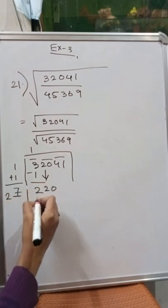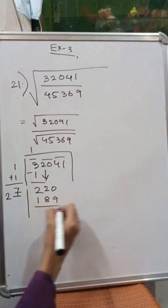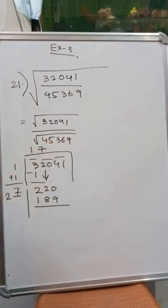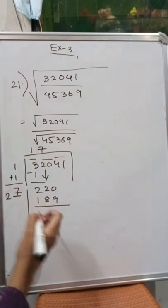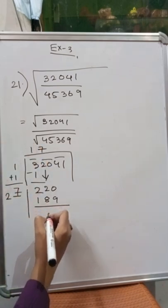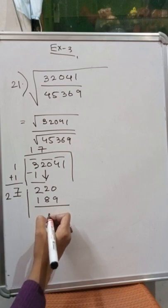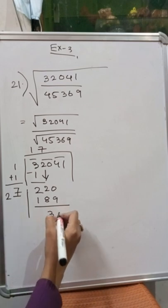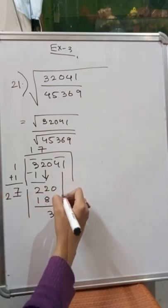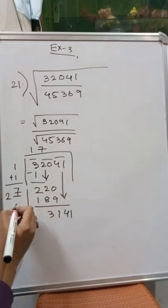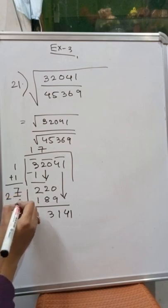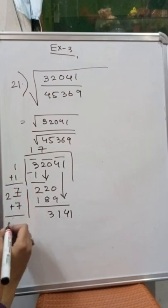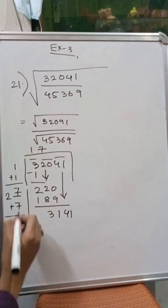If I place 7 here, I get 189. I place 7 here as well, and after subtraction I get 31. Then 41 comes down. Whatever number is in the last digit, we add the same number to proceed to the next step.